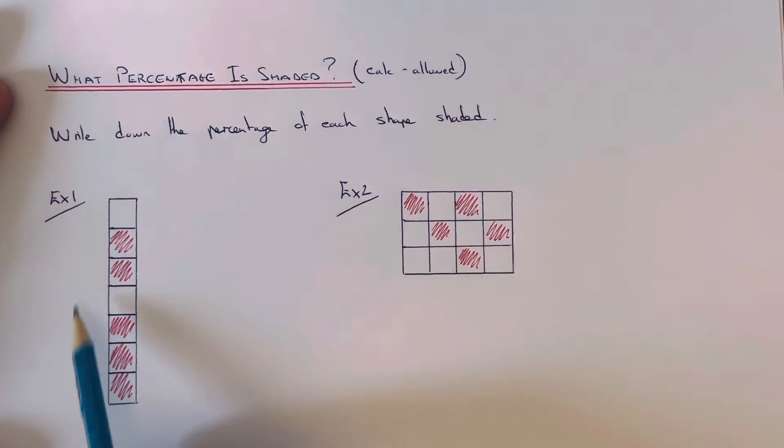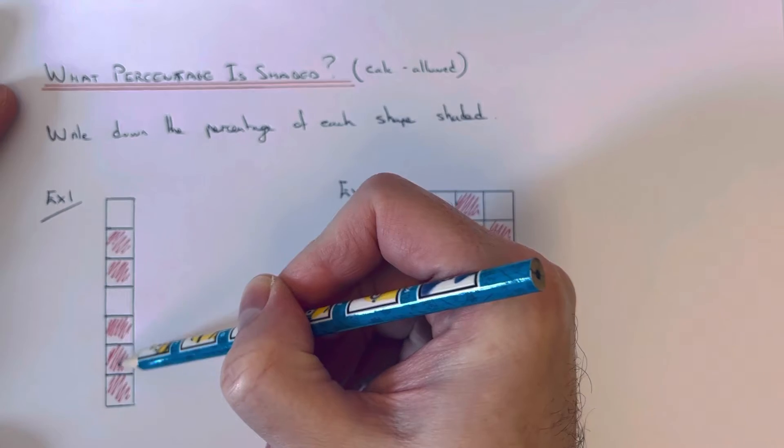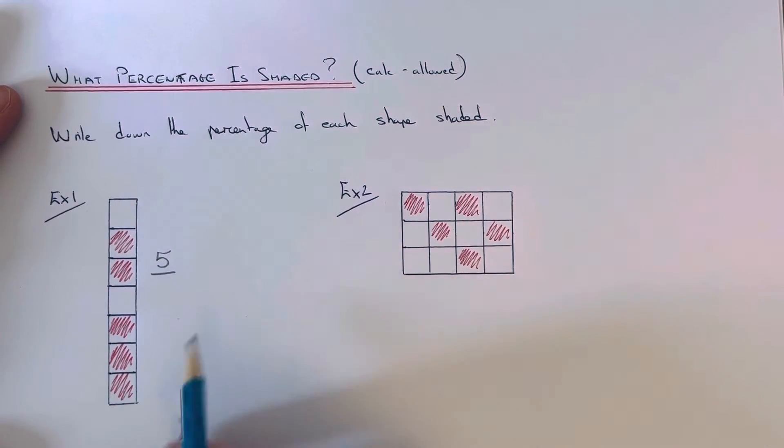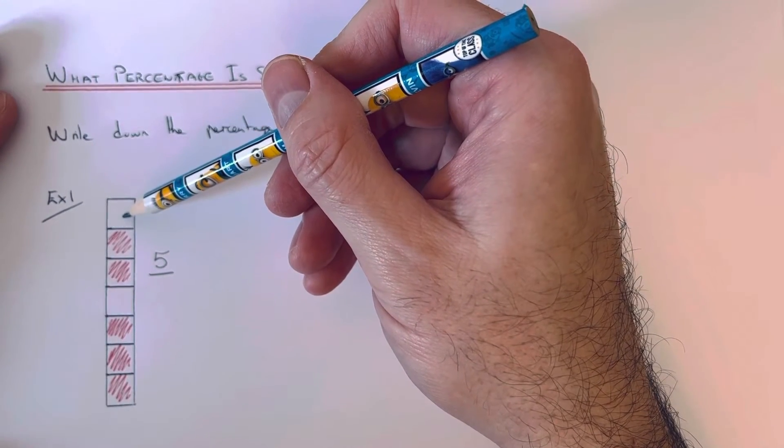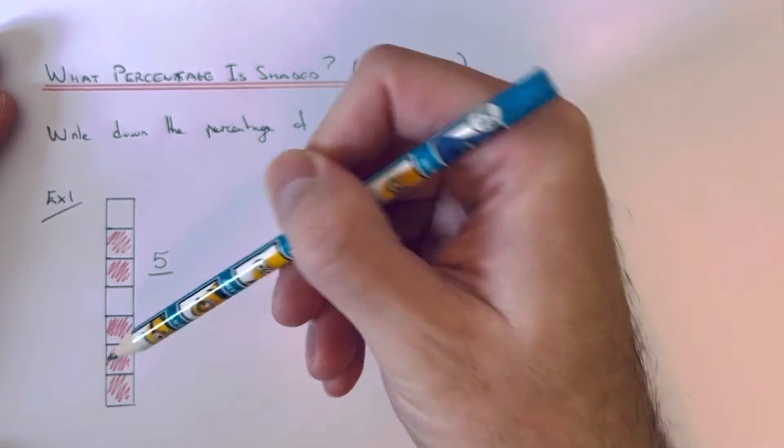So what percentage of this shape is shaded red? First of all, I'm going to write down the fraction which is shaded red. So we've got 1, 2, 3, 4, 5. So we've got 5 on the numerator, and then on the denominator we're going to count all the squares that we have altogether. So we've got 1, 2, 3, 4, 5, 6, 7.